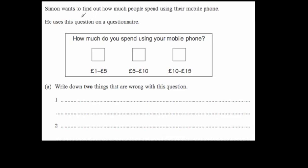We're now going to look at some exam questions. Someone wants to find out how much people spend using their mobile phone. He uses this question: 'How much do you spend using your mobile phone?' with three option boxes: one pound to five pounds, five pounds to ten pounds, and ten pounds to fifteen pounds. The question says write down two things that are wrong with it. Firstly, it doesn't include a timescale — it doesn't say per day, per week, per month, or per year. So it needs a timescale.